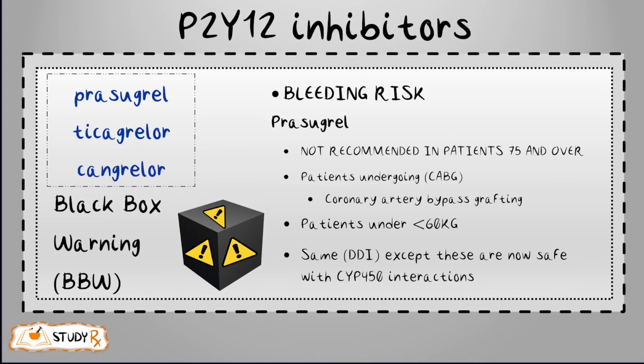Now for the last three medications — prasugrel, ticagrelor, and cangrelor — continue to think about hemorrhaging. The black box warning is bleeding risk, applicable to all P2Y12 inhibitors. For prasugrel specifically, it is not recommended in patients 75 years and older, nor in patients undergoing CABG (coronary artery bypass grafting), a surgery that improves blood flow to the heart.